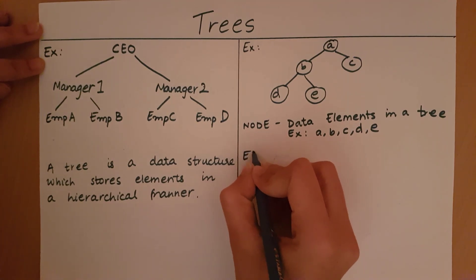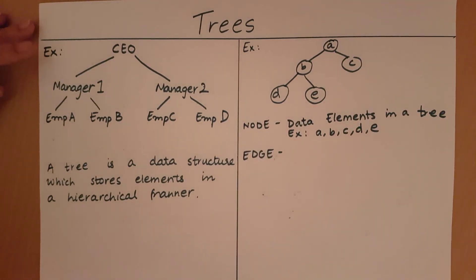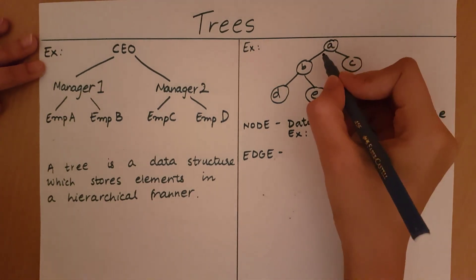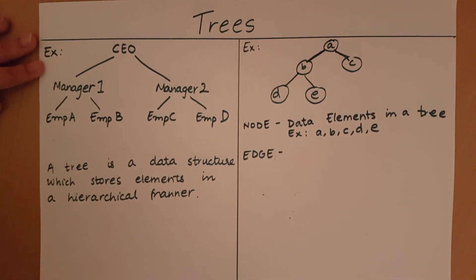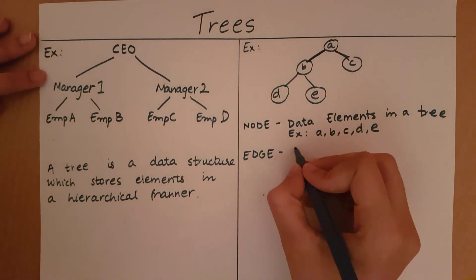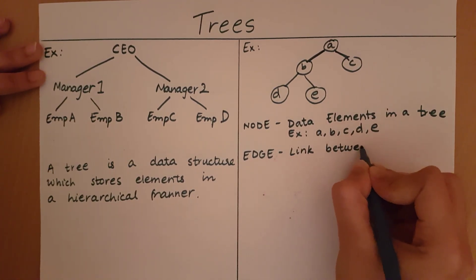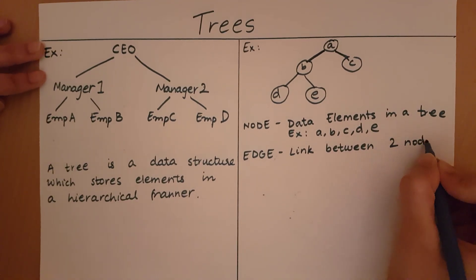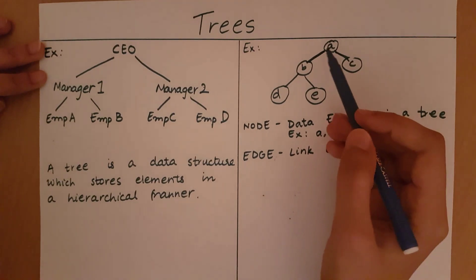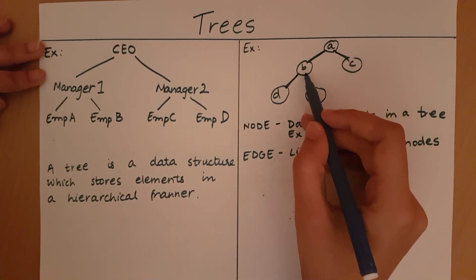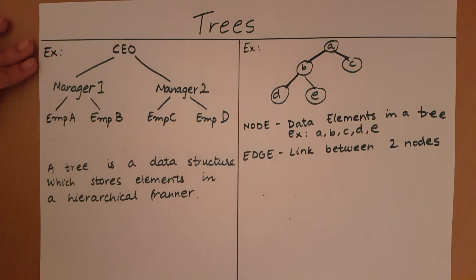Now let's see what an edge is. An edge is going to be a link between two nodes of a tree. As you can see, A branches out to B and C, so A is having a link between B and C — this link is known as an edge. So the edges here could be the edge from A to B, B to D, A to C, or B to E. The lines in a tree are known as edges.